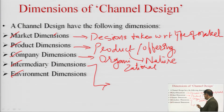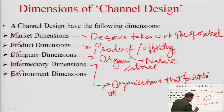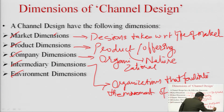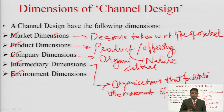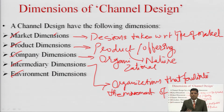Intermediaries are various organizations that facilitate the movement of the product from the producer to the consumer. The intermediary dimension is about the types of intermediaries that the organization is interested in keeping while constructing the marketing channel. Depending on the reach of the market, the nature of the product, the nature of the consumer, and the marketing objectives of the organization, it would be interested in keeping certain intermediaries while not interested in others.